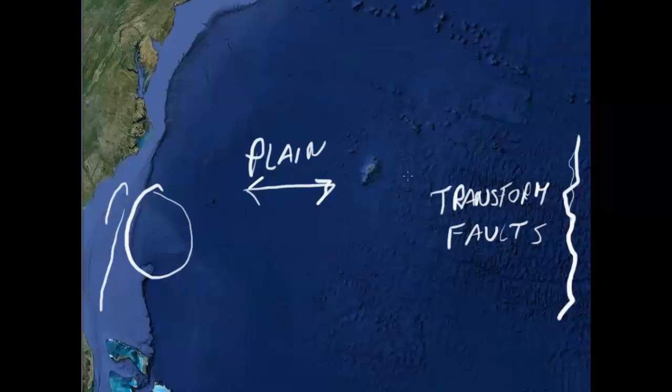As you head east across the Atlantic Ocean, you'll come across the transform faults. If you remember these are all perpendicular to the mid-Atlantic ridge here. And much of these features are shown again as you go to the east of the mid-Atlantic ridge.